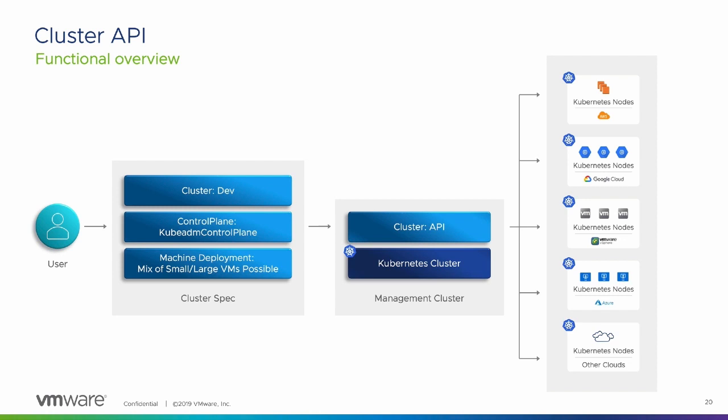Cluster API will use the declarative nature of Kubernetes to make sure it achieves my desired state. If at a later time I want to add more Kubernetes workers or masters, I simply edit the specification and apply it to the management cluster. Cluster API has many different providers available, and there is a Cluster API provider for vSphere that allows it to communicate with vCenter and deploy virtual machines based on templates or content catalogs.